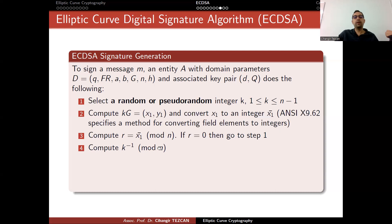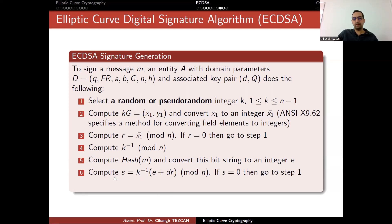If it is not zero, you compute inverse of k modulo n. Recall that k is the number you choose initially. Then, you compute the hash of your message. Recall that signing the message itself is not practical. This is why we always hash the message and then sign it. You have to choose a proper hash function. And convert this bit string to an integer e. And you then compute e plus dr. Recall that d is your private key. Multiply it with k inverse, which you calculated here. And obtain a value s.